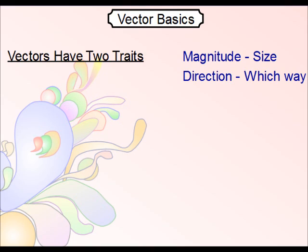With magnitude, we're talking about size. And often times when we use vectors to represent things like speed or distance, we're talking about how much distance, how much velocity.